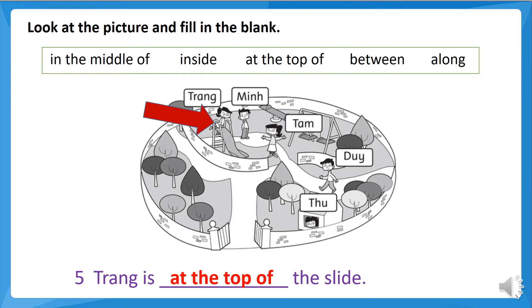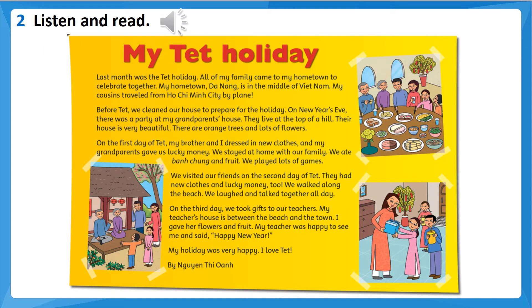Let's move on to the reading comprehension: My TET Holiday. Now look at this — Listening 105, listen and read. My TET Holiday: Last month was the TET holiday. All of my family came to my hometown to celebrate together. My hometown, Da Nang, is in the middle of Vietnam. My cousins traveled from Ho Chi Minh City by plane.